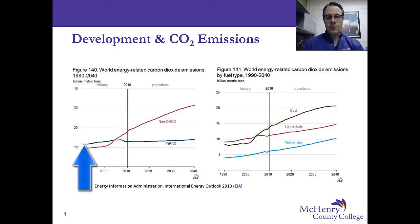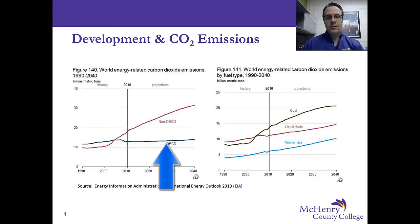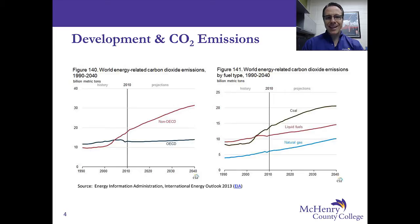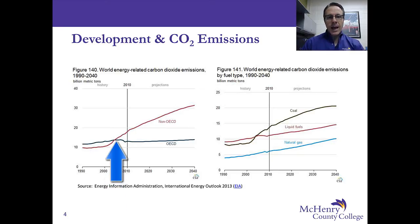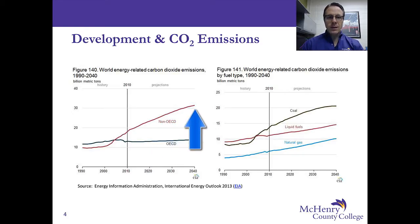We have two trend lines in Figure 140. One is for OECD countries, and we see that trend line is fairly flat. For non-OECD countries, however, we see that they exceeded the carbon dioxide emissions of OECD countries back in about 2005, and going forward to 2040, non-OECD countries greatly exceed OECD countries.